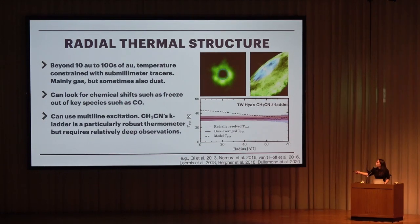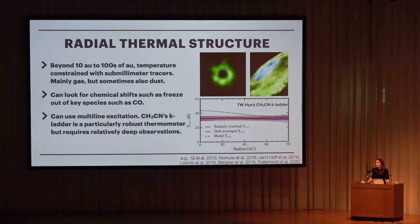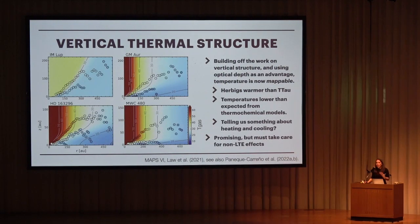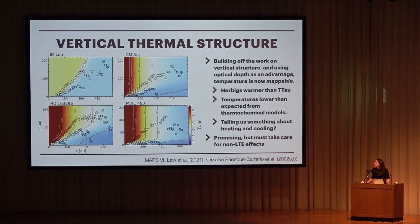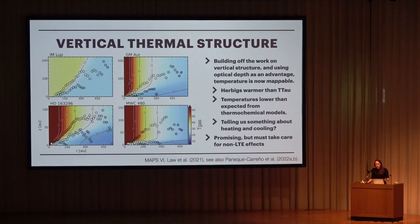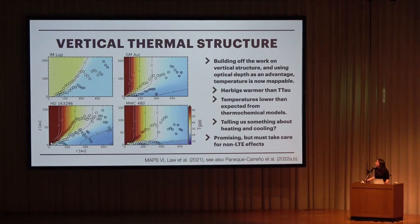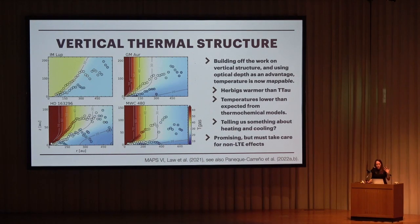Inside 10 AU, most tracers are near-infrared or mid-infrared — using Boltzmann diagram analysis or slab excitation models to extract physical information about the inner disk. We often trace the surface rather than the midplane. For larger radial thermal structure beyond 10 AU, submillimeter tracers are used, such as rings of N2H+ tracing CO disappearance, or multi-line analysis. Methyl cyanide (CH3CN) K-ladder lines are a robust thermometer observable in one setup, now detected in disks. ALMA also provides empirical temperature maps using the high optical depth of 12CO, finding that Herbig disks are truly warmer than T Tauri disks, and temperatures are typically lower than thermochemical models predict — suggesting something about heating and cooling agents. Non-LTE effects need consideration.